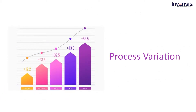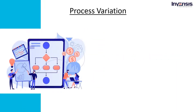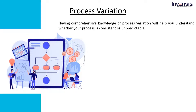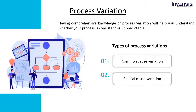Before creating a control chart, you must understand various types of process variation. Comprehensive knowledge of process variation will help you understand whether your process is consistent or unpredictable. There are two types of process variations: common cause variation and special cause variation. Let's discuss these types in detail.